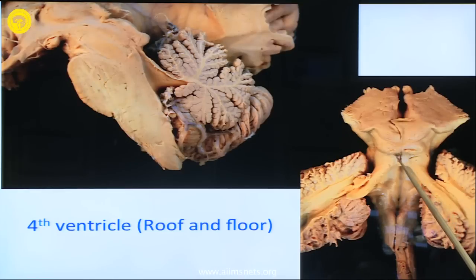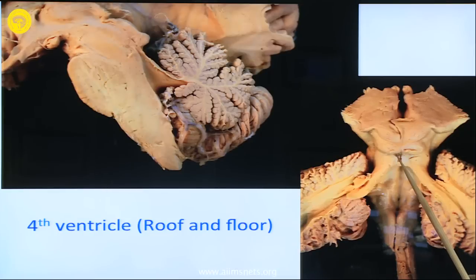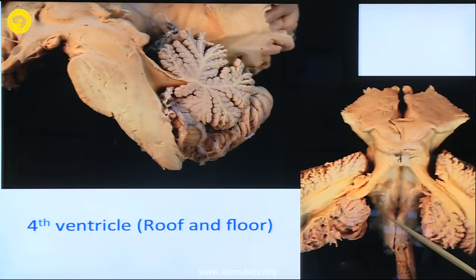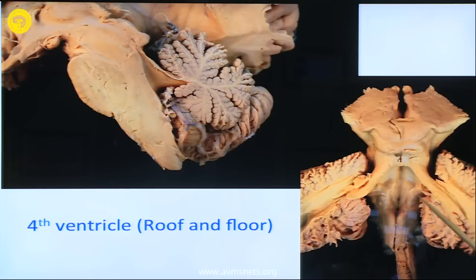Here the fourth nerve exits — this is the only nerve which comes from the dorsal side, coming from this opening. These are the superior cerebellar peduncles coming from the dentate nucleus in the cerebellum. The boundaries you can see here: this is the gracile tubercle, and in the midline this is the gracile fasciculus; the cuneate fasciculus is lateral to it, and the cuneate tubercle is here. The continuation of it is the inferior cerebellar peduncle, which enters into the cerebellum.